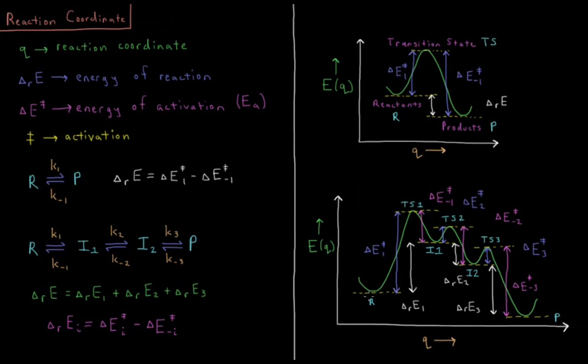Here we have our reactants going up to transition state 1 to intermediate 1, which is some minimum in energy, thus it's a stable chemical species. Going up to transition state 2 down to intermediate 2, second reaction being in there. And finally, our third reaction going from intermediate 2 up to transition state 3 down to our products.